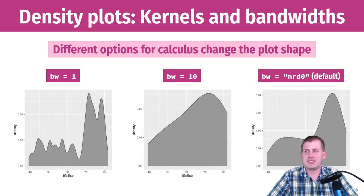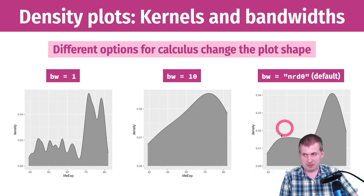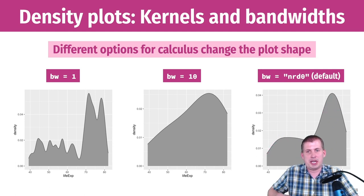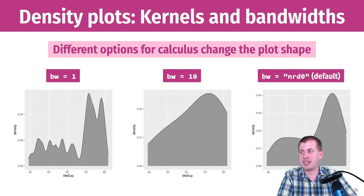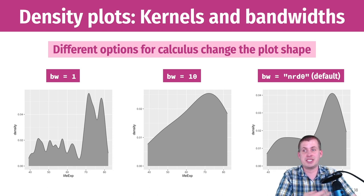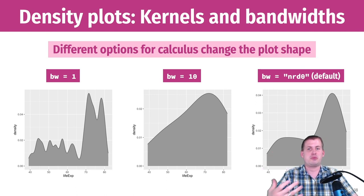I generally stick with the default bandwidth. There are situations where you might want to switch it, but I rarely do in practice. Most of the time it's for a quick visualization, and if I'm doing a published visualization I don't care about tiny differences from changing the bandwidth from, say, 7 to 8. It's really just to get the gist of the shape of the data, not to find actual scientific differences.